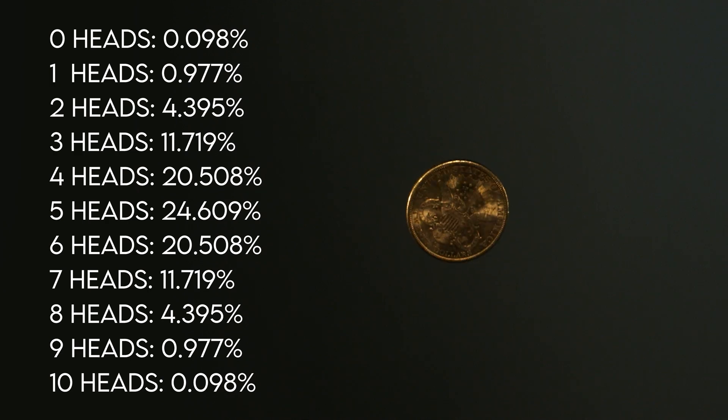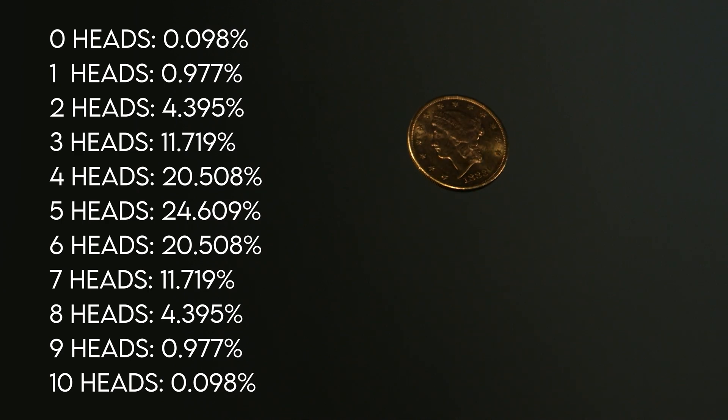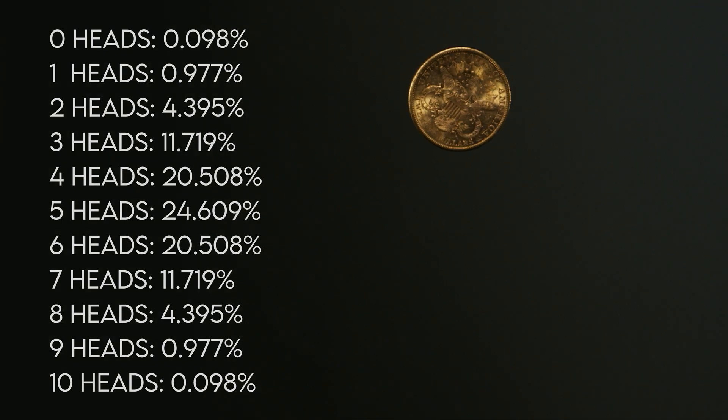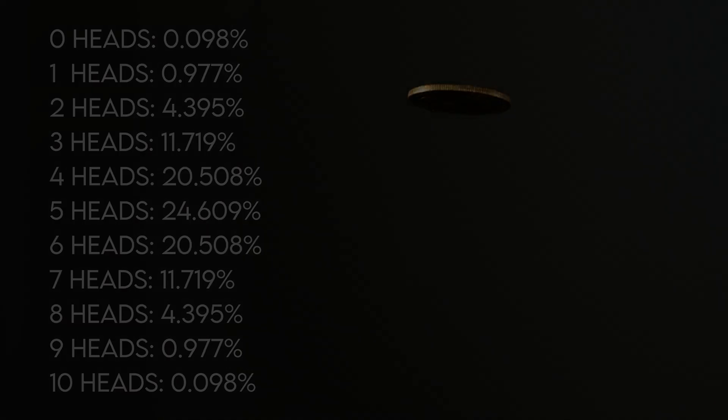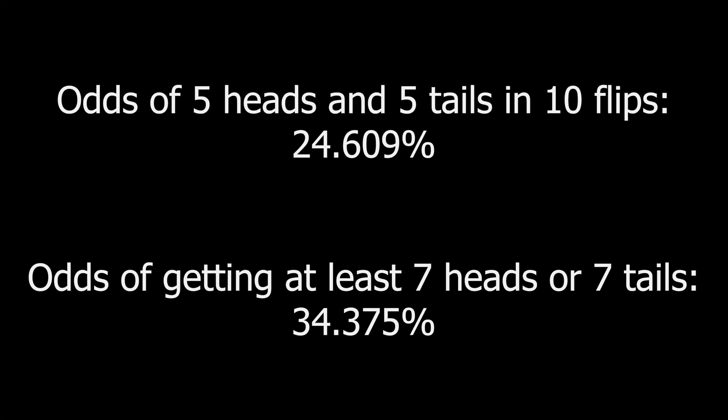Everyone knows that if you flip a coin, the odds of heads and tails are both 50-50. But there's a weird phenomenon in statistics: if you flip a coin ten times, you most likely won't get exactly five heads and five tails. In fact, there's a way better chance that you end up with the heads and tails split at least 7-3 or worse.